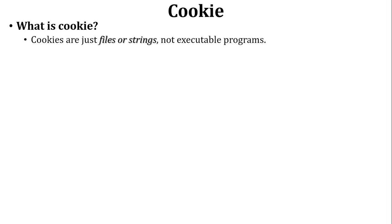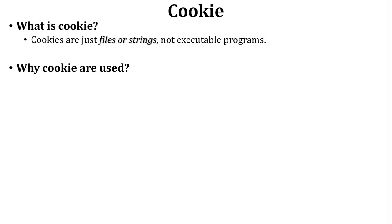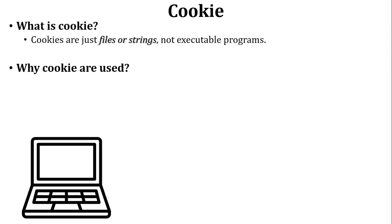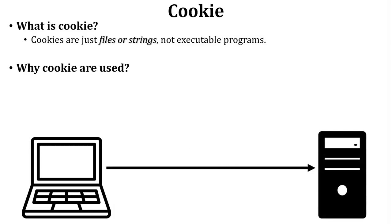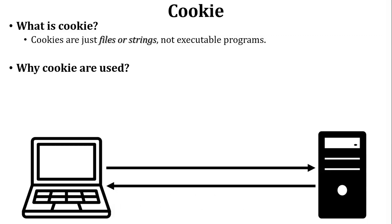Let us start with what is a cookie. A cookie is just a simple file or string which is stored inside the browser. Cookie is not an executable program. Now, why are cookies used? Let us discuss one scenario. There is one user who wants to access a website on the internet, so the user sends a request to the web server, and the web server sends a reply to the user for that particular request.